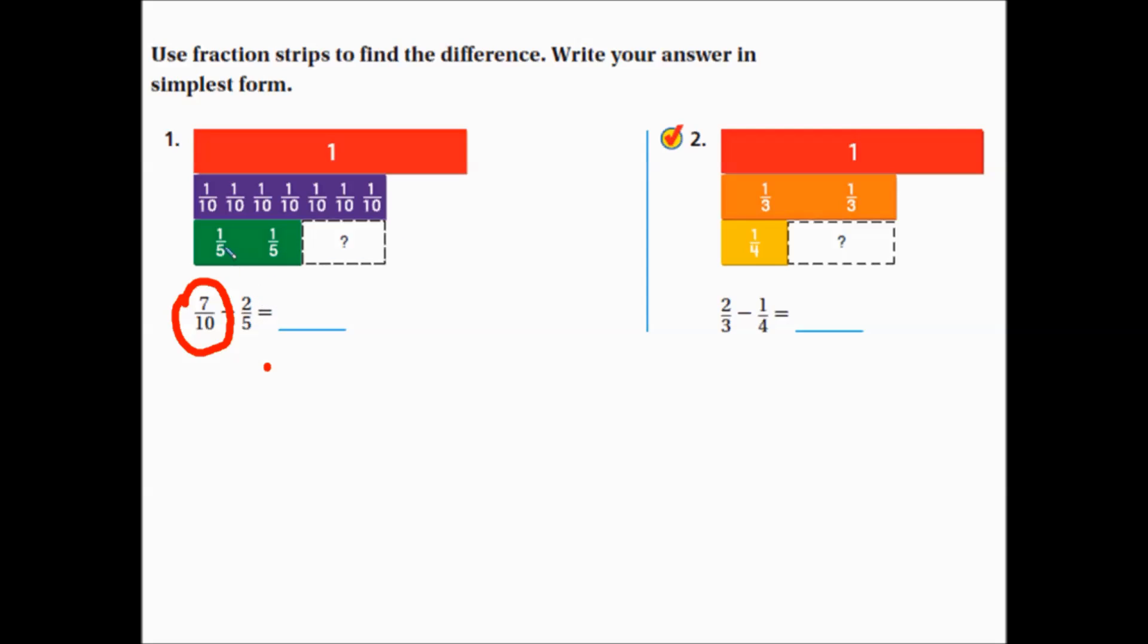So the 2 fifths, 1 fifth, 2 fifths, are right here. And then your answer is going to be whatever fits in this space here. It kind of models subtracting numerically. You put the big number on top, then the smaller number, and then you figure out the difference between the two.